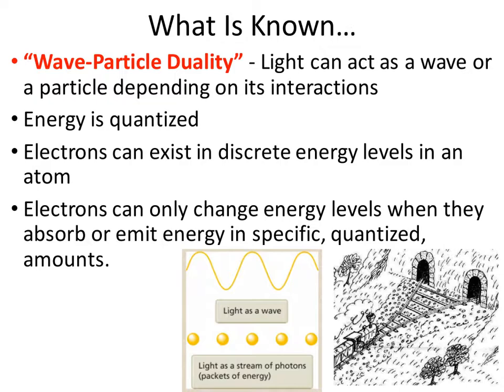Bohr worked on this and said that electrons can exist in discrete energy levels around a nucleus in an atom, but they can only change energy levels when they absorb a certain amount of energy called the quanta of energy. And if they drop down to a lower state energy or the ground state energy, they release energy — again that quantized amount.